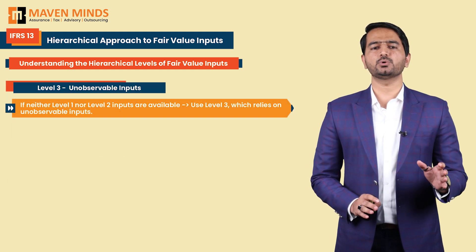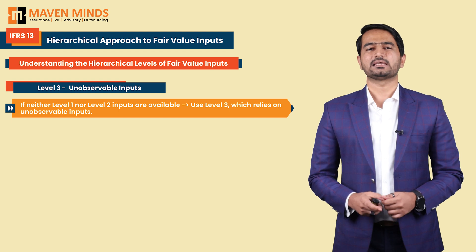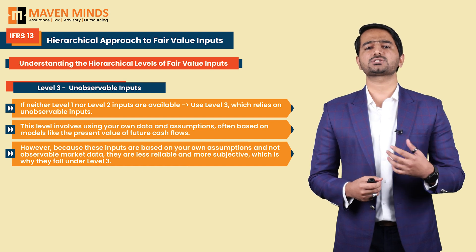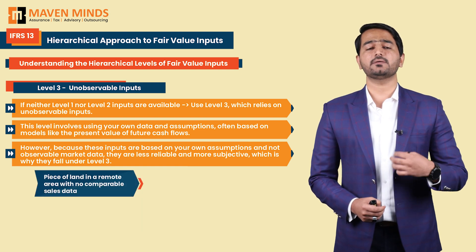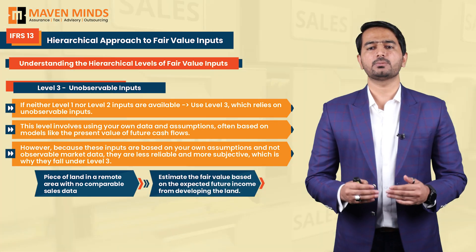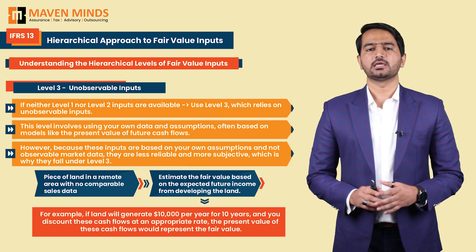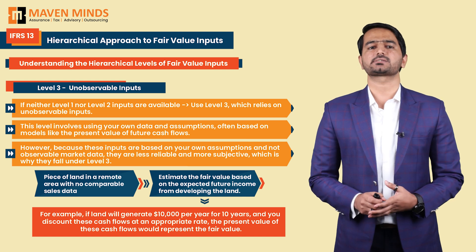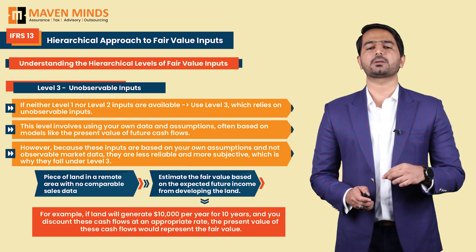If neither Level 1 nor Level 2 inputs are available, you turn to Level 3, which relies on unobservable inputs. This level involves using your own data and assumptions, often based on models such as the present value of future cash flows. Consider a situation where you own a piece of land in a remote area with no comparable sales data. You might estimate fair value based on expected future income — for example, if developing the land will generate $10,000 per year for the next 10 years, you discount those cash flows at an appropriate discount rate.